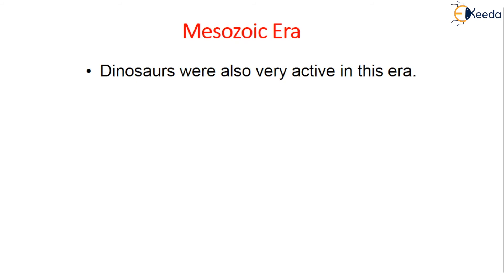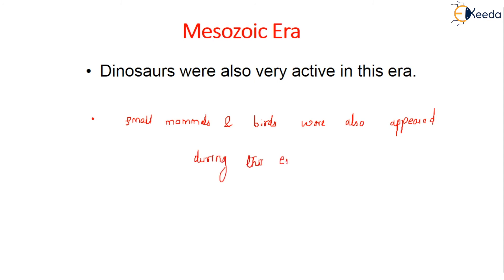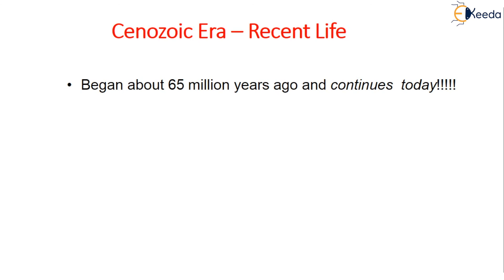During the Mesozoic era, dinosaurs were very active. Small mammals and birds also appeared during this era. The Cenozoic era, meaning 'recent life,' began about 65 million years ago and continues to today.